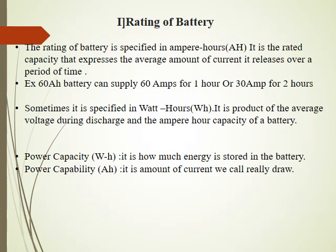What does ampere hour mean? If I say, for example, that I have a 60 ampere hour battery, it means the battery can supply 60 amperes of current for one hour, after which the battery will get discharged. Or if the load is smaller — say drawing a current of 30 amperes — that particular battery is capable of supplying 30 amperes of current for two hours.